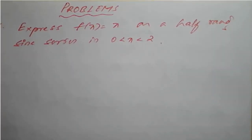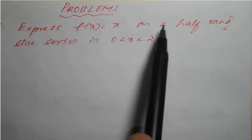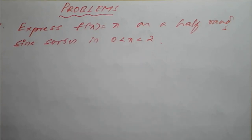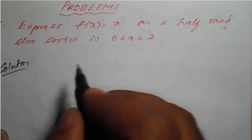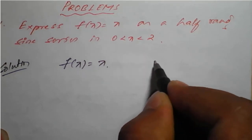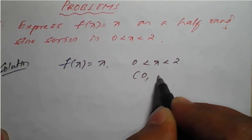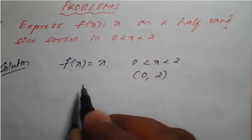Hello students, we will see problems based on half range Fourier series. The first problem is: express f(x) = x as a half range sine series in x, where 0 < x < 2. The given function is f(x) = x and the range is the interval (0, 2), so l = 2.